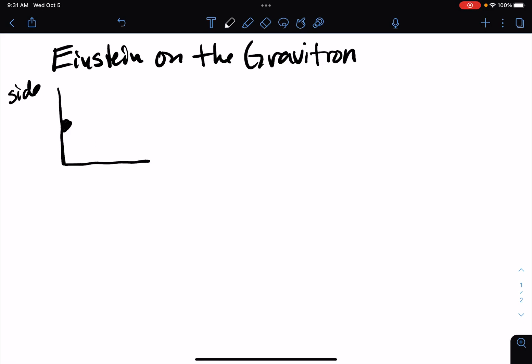So here's a side view of Einstein riding the Gravitron. See, I can't remember which thing I said. And the speed, the linear speed V is coming out of the page.